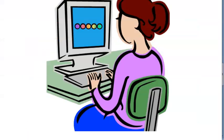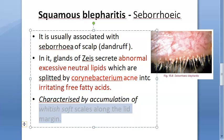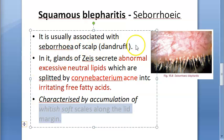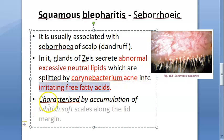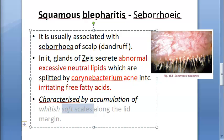Seborrheic blepharitis is primarily anterior blepharitis with some spillover posteriorly. It is very common and associated with seborrhea of the scalp. Some constitutional and metabolic factors also play a role in its etiology. Symptoms include deposition of whitish soft scales at the lid margin, mild discomfort, irritation, occasional watering, and a history of falling eyelashes — this is madarosis.